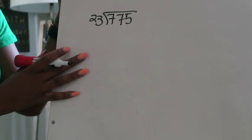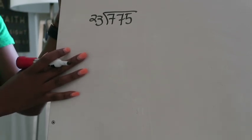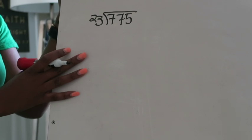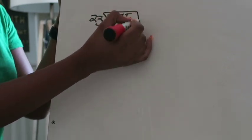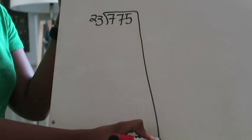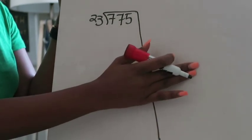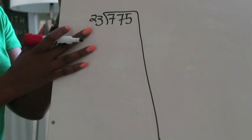So here's our sample problem for partial quotients. Since we're learning this strategy we are not going to be using that silly saying. Before you start you want to draw a line extending your division house down. This creates a workspace that you're going to need from the actual problem itself.